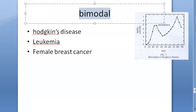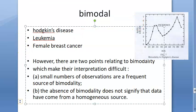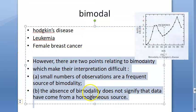The textbook says this bimodal distribution fascinates the epidemiologist. There are two points relating to bimodality that make interpretation difficult: small number of observations, and the absence of bimodality does not signify that data have come from a homogenous source.